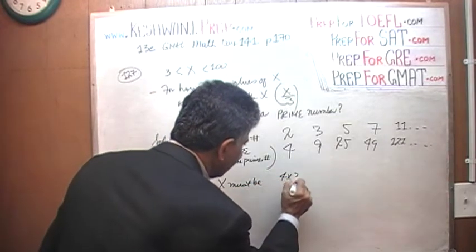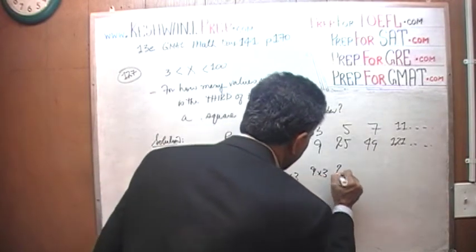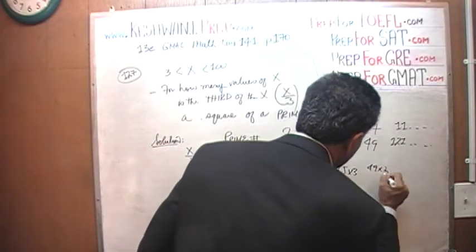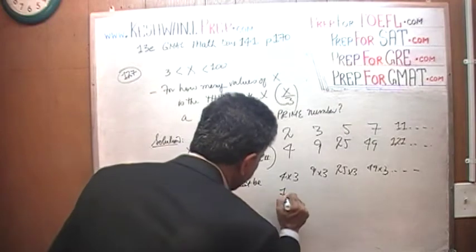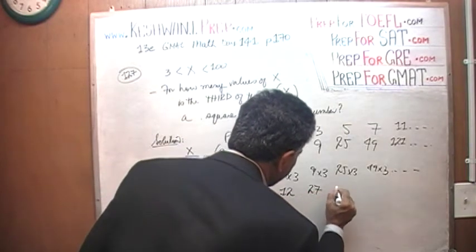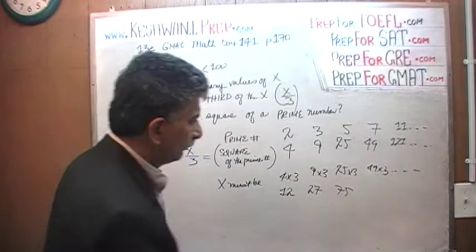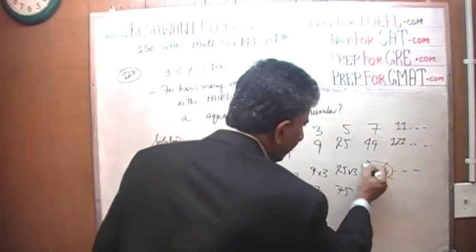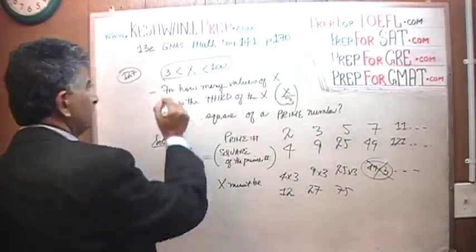Then that implies X must be: 4 times 3, 9 times 3, 25 times 3, 49 times 3, and so on. That gives us 12, 27, 75 — and we don't have to worry about 49 times 3, because that's more than 100.